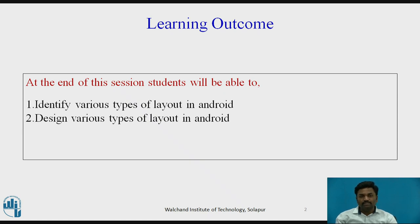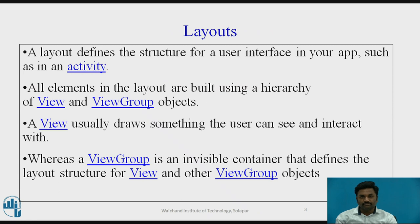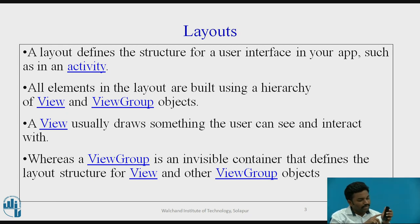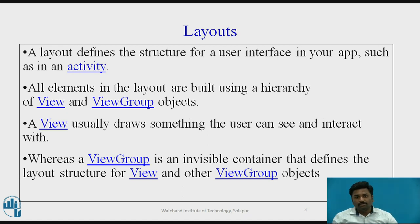We are going to study various types of layouts present in Android. It is very important because we have various screen sizes. Now, what is a layout? Layout defines the structure for a user interface in your app, such as in an activity. Activity is something we see on a mobile — that is a screen. Whatever particular screen we see on a mobile is an activity. Whenever you open an app, that particular screen which we see is an activity.